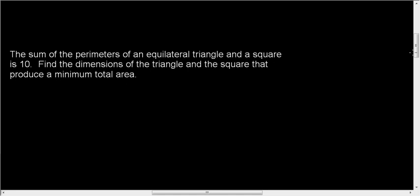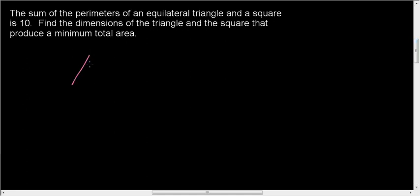First I'm going to draw a picture to guide me. So an equilateral triangle, I'm going to call these sides T, so I know they're all the same. Now the square I'm going to call S all the way around. Notice that I do not assume that they are the same. That is a dangerous assumption, don't make that assumption.